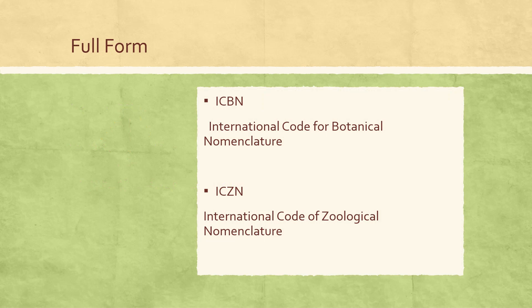Two full forms that have to be noted are ICBN and ICZN. ICBN stands for International Code of Botanical Nomenclature and ICZN stands for International Code of Zoological Nomenclature. You should not make the mistake of confusing 'of' and 'for' - for botanical nomenclature it is 'for', and for zoological nomenclature it is 'of'.